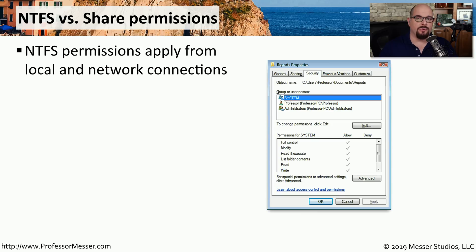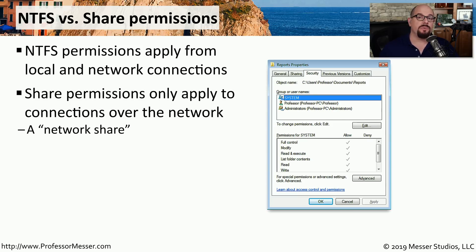When you access a file in Windows, your access may be controlled through NTFS permissions or share permissions. NTFS permissions are assigned to the file system itself, applying both when accessing a file locally and across a network share. There is a separate group of permissions for users connecting across a share, meaning you could have one set of permissions for local access and a completely different set for network access.